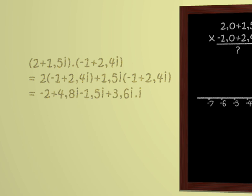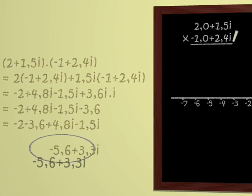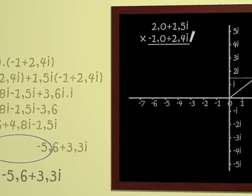Which is minus 2 plus 4.8i minus 1.5i plus 3.6i times i. But i squared is minus 1, since we invented i for this purpose. So we get minus 2 plus 4.8i minus 1.5i minus 3.6i. And tidying up, that gives us minus 2 minus 3.6 plus 4.8i minus 1.5i, giving us in all minus 5.6 plus 3.3i. There you are. We know how to multiply complex numbers. In other words, we can multiply points in a plane.